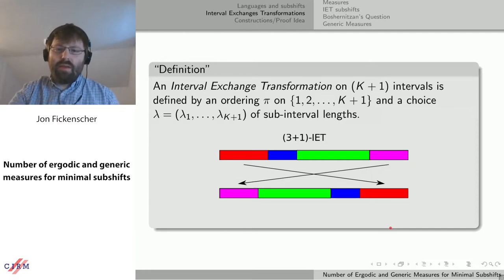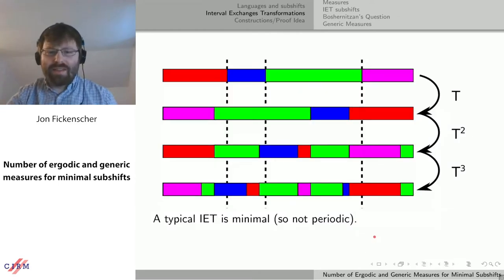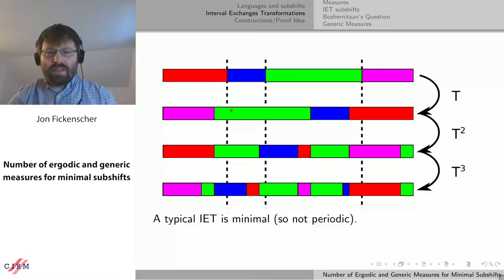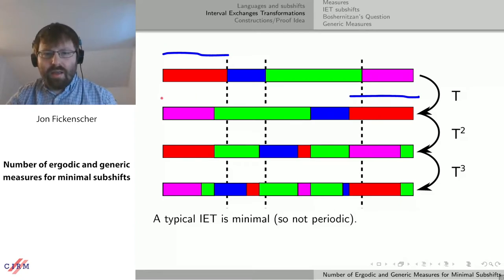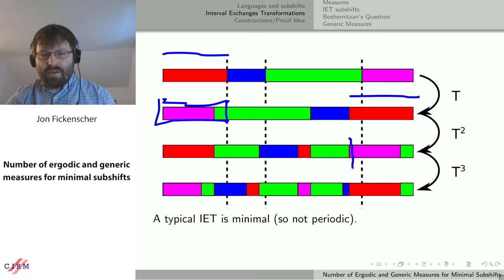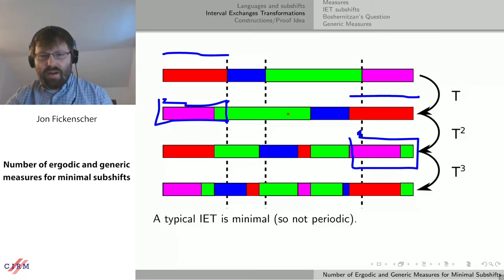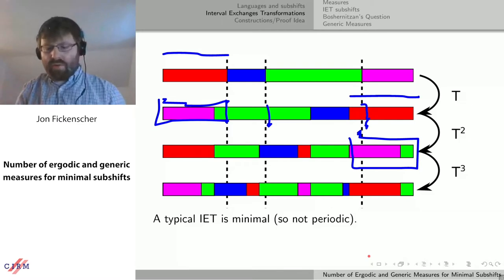The obligatory picture shows what happens when you take these first intervals and keep applying the map over and over. The first interval gets moved to the last interval as defined by the permutation. When I apply the map again, this piece is translated to be the last interval again — so I've actually cut what used to be my third interval into multiple pieces. Basically, if you have four intervals, this is not a four-periodic transformation. That's essentially what I want to say here.